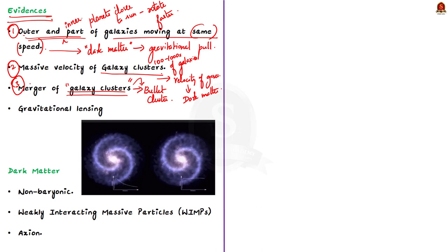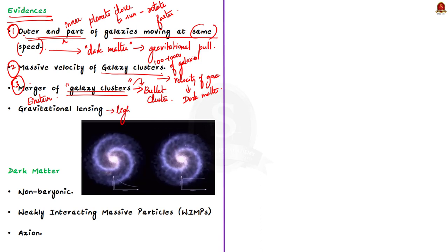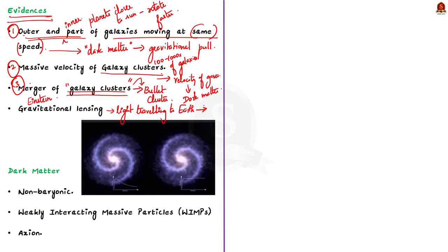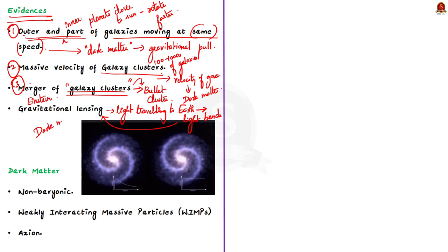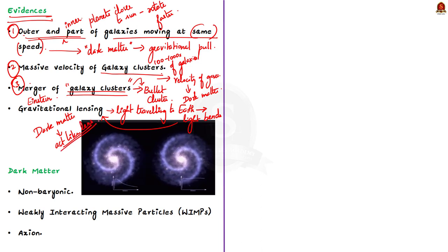Einstein said that everything, including light, is influenced by gravity. When light from a distant galaxy travels to Earth, it bends and creates multiple images of the background galaxy - a phenomenon called gravitational lensing. Here, dark matter in the galaxy cluster acts like a lens, aiding light from a faraway galaxy before it reaches Earth. If there was no dark matter, there would be no observable gravitational lensing. This also provides evidence for the presence of dark matter.